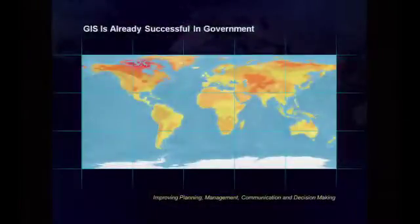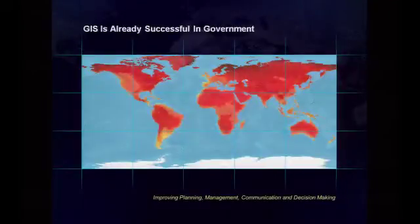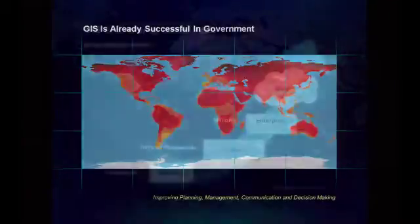Today, GIS is already very successful in government. It's being used at all levels of government — cities, counties, states, national agencies — for land use planning, for all sorts of things, and it's also being used to help us see and understand the globe in a new context, with things like this global climate change model.